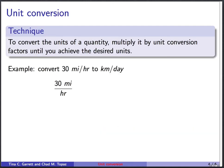Now in order to do unit conversion, to convert the units of a quantity, we simply multiply it by unit conversion factors until we achieve the units we want. So we'll do a couple of examples here.